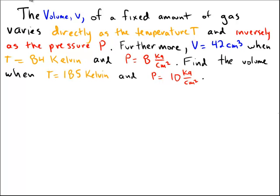In addition to that, let's assume the initial condition of volume equals 42 cubic centimeters when temperature equals 84 degrees Kelvin and the pressure is 8 kilograms per square centimeter. Let's try to find the volume when the temperature is 185 Kelvin and the pressure is 10 kilograms per square centimeter.